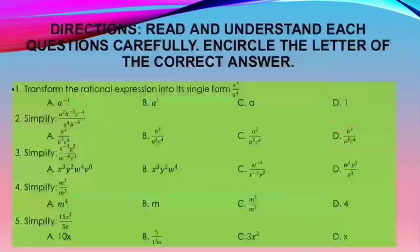Number 2: Simplify a squared, b to the power of negative 3, c to the power of negative 4, over a to the power of 4, b to the power of negative 6. Is it A. a squared over a cubed, c to the power of 4; B. b cubed over a squared, c to the power of 4; C. a squared over b squared, c to the power of 4; or D. b squared over a squared, c to the power of 4?